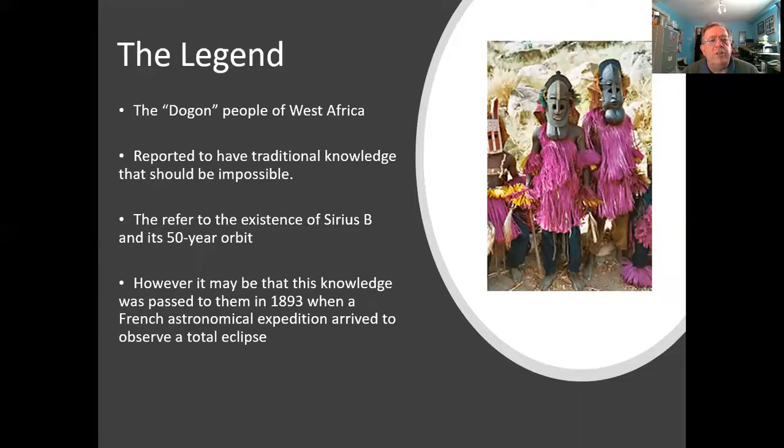There's another curious thing about Sirius, and that is the legend of the Dogon people of West Africa. The story goes that this ancient tribe had tribal stories and knowledge that they passed on verbally from generation to generation, and they refer to the existence of Sirius B and even to its 50 year orbit. This was a real mystery. How did these people possibly know about this before the actual discovery of it much later? Well, we think that it might have been passed to them. There was a French astronomical expedition that arrived to observe a total eclipse of the sun in 1893, so maybe that's where the stories originated, but we're still not quite sure.